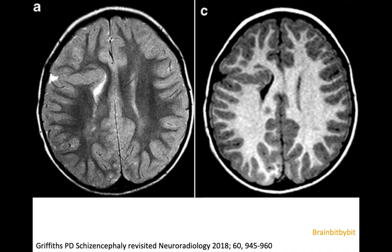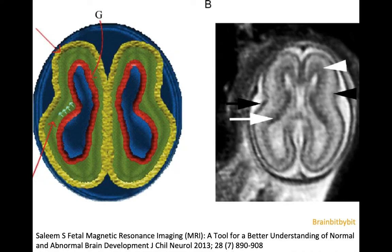Schizencephaly occurs when there is a problem in the germinal matrix. This is an MRI of a 19-week-old human embryo, where you can see the germinal matrix lining the ventricles, the cortical plates already in place, and then the green zone with high signal on the T2-weighted image, where the neurons are migrating.